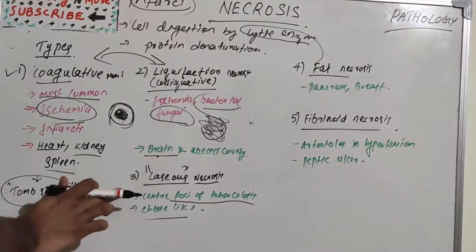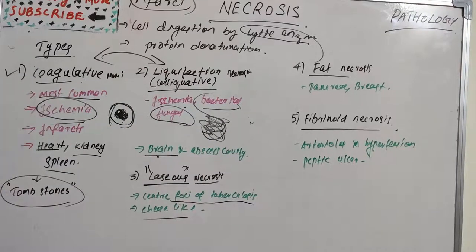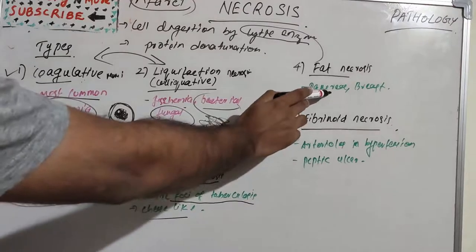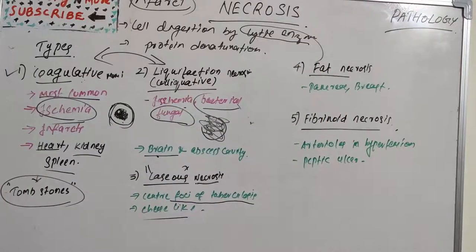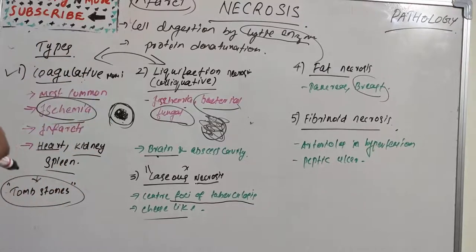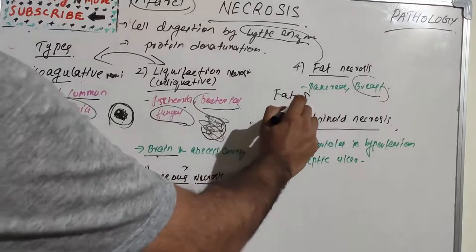The fourth type is fat necrosis, referring to focal areas of fat destruction. It is most commonly seen in acute pancreatic necrosis and traumatic fat necrosis, which is commonly seen in the breast. Pancreatic enzymes leaked out of acinar cells liquefy the membrane of fat cells in the peritoneum. Lipase enzymes split the triglyceride esters within the fat cells into fatty acids, which combine with calcium to produce grossly visible chalky white areas known as fat saponification.